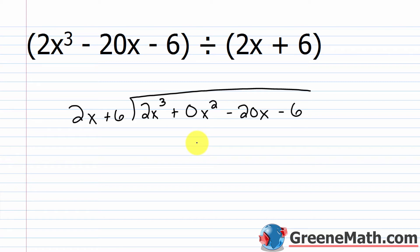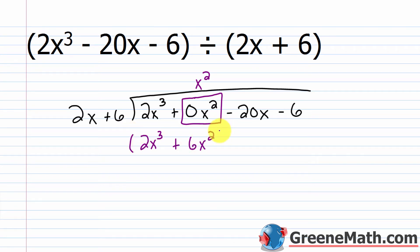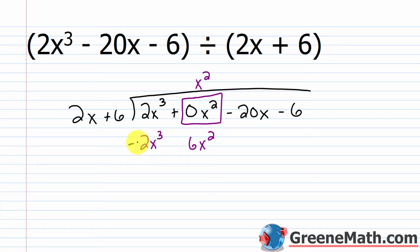Once you've done that, it's the same thing you've been doing throughout this section. Go leading term into leading term: 2x goes into 2x cubed how many times? 2x cubed over 2x — the 2s cancel, x cubed over x gives me x squared. So I put x squared up top, then multiply: x squared times 2x is 2x cubed, and x squared times 6 is plus 6x squared. I want to subtract this polynomial, so I'll change the signs. 2x cubed plus negative 2x cubed is 0. 0x squared minus 6x squared is negative 6x squared.